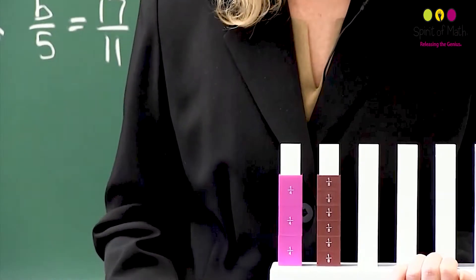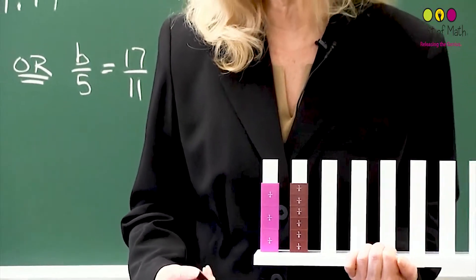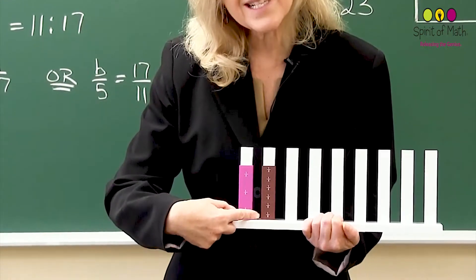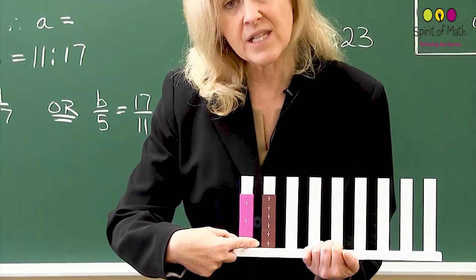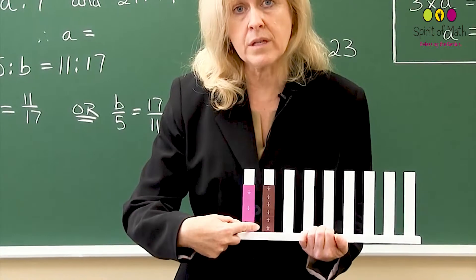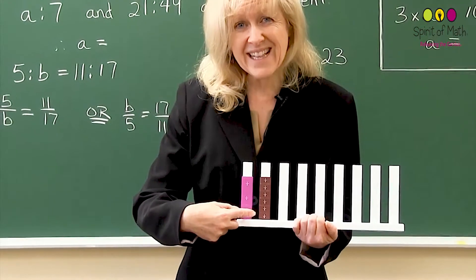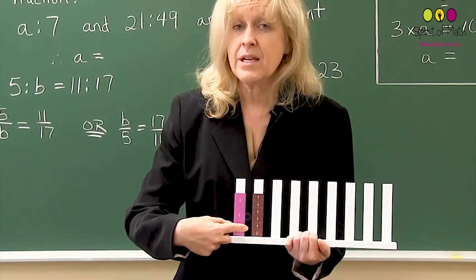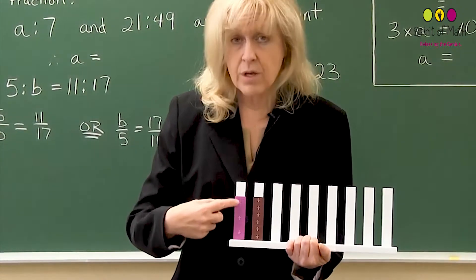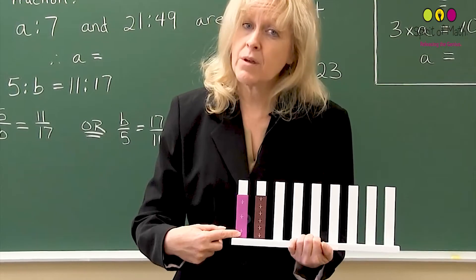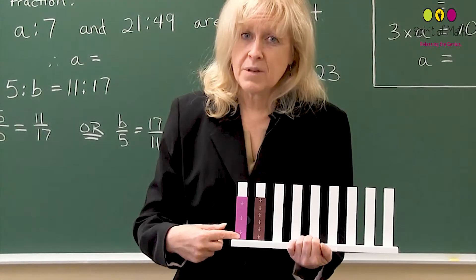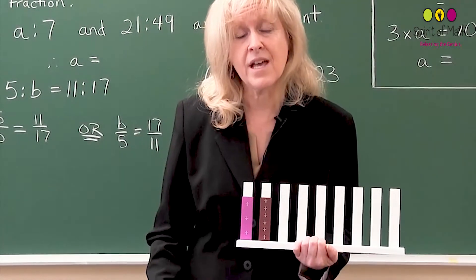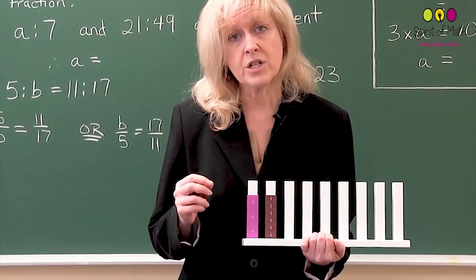Now, they're the same amount, but they actually are written differently because this only has three pieces, whereas this has six pieces when you have six eighths. So that's why you say that they're equivalent because they're not exactly the same. They have different meanings. Six eighths means you have six pieces and each piece is an eighth. Three quarters says that you have three pieces and each piece is a quarter, but they are the same amount at the end. That's equivalent fractions.